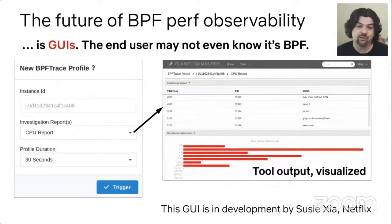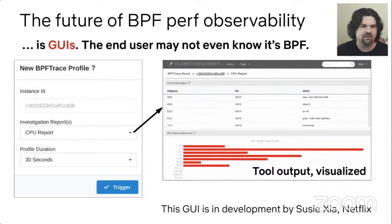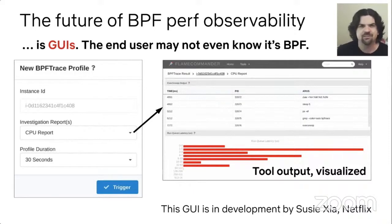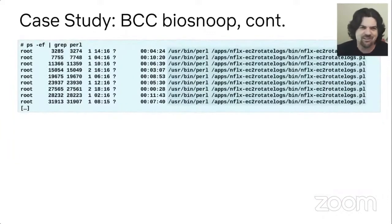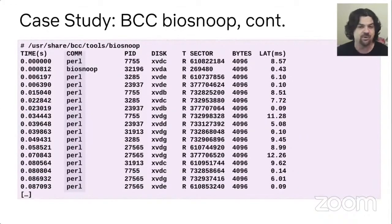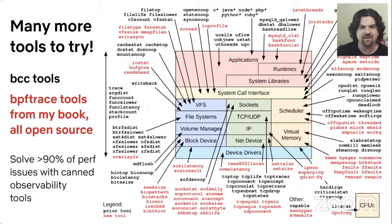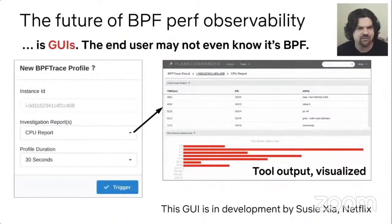I think it's worthwhile to learn the tools, because these GUIs are built upon either the same observability metrics or actually the same tools. Once you learn how to use execsnoop, biolatency, and biosnoop, you'll see the same things in the future GUIs. One of the hardest things about getting good at BPF performance analysis is knowing how to interpret the output. You can use the BCC tools right now, and when this becomes a GUI you'll have solid experience in how to solve performance issues and what the tool outputs mean.